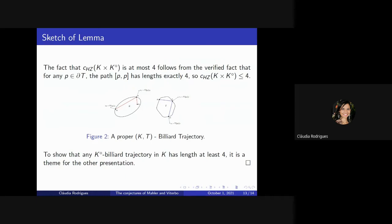Now, I will show a sketch of the lemma. The fact that C-HZ is at most four follows from the verified fact that for any P in the boundary of T, the closed path P has length exactly four. So, we have that part of the length, which we want to prove it is equal. Now, to count the length, to be exactly four, we can give you an abstract geometry view.